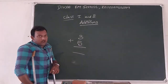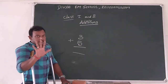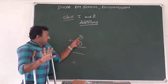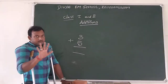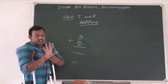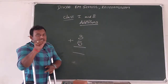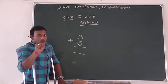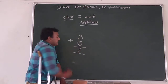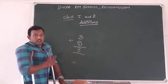And the second number is 5. So the second number, we take 5 on our fingers. First number 3, keep it in mind. After 3, we do the counting. After 3: 4, 5, 6, 7, 8. So the total is 8. Using our fingers, we can do the addition like this.